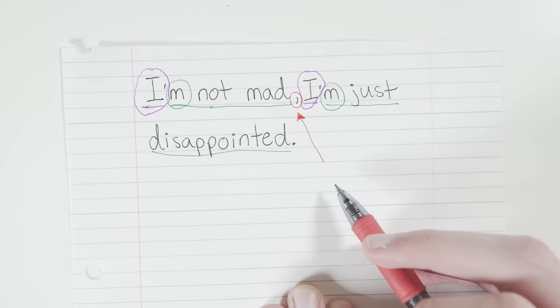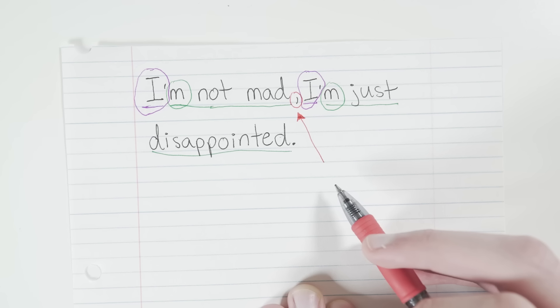Yet again, we have two complete thoughts separated by just a comma. This does not work. You can combine two sentences with a comma and a conjunction. You can do it with a semicolon. You can do it with a period. But you cannot do it with a comma alone. I'll keep saying that until you remember it forever. You cannot split two sentences with a comma alone. So here, we have a run-on.